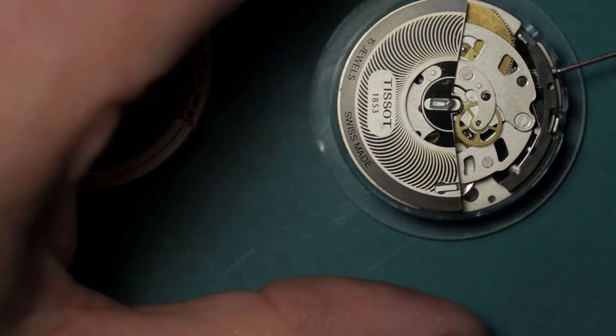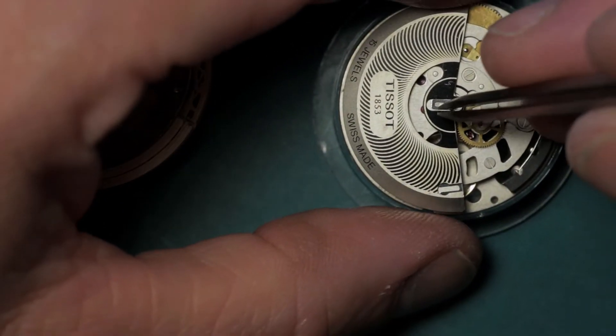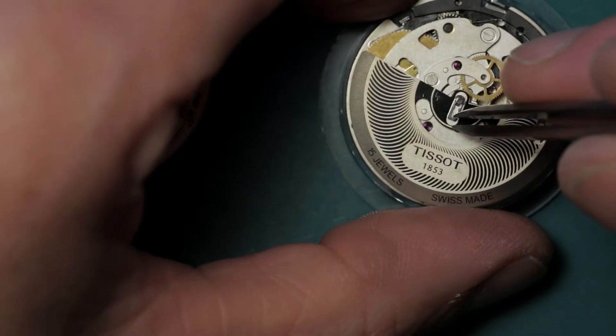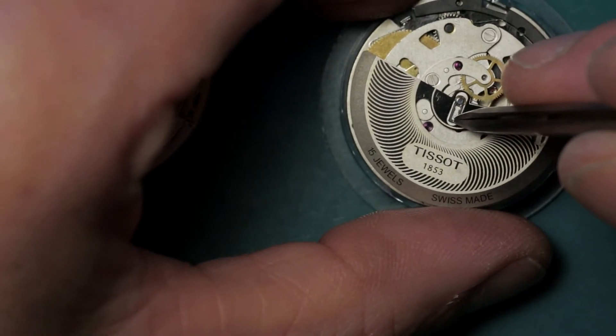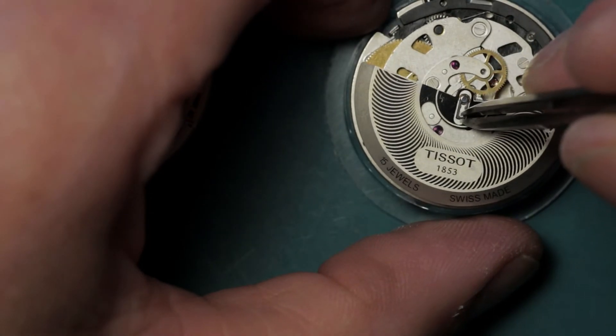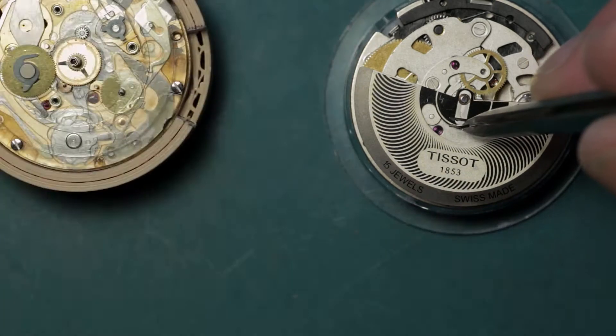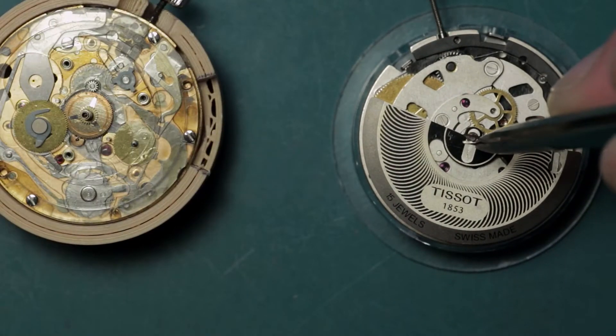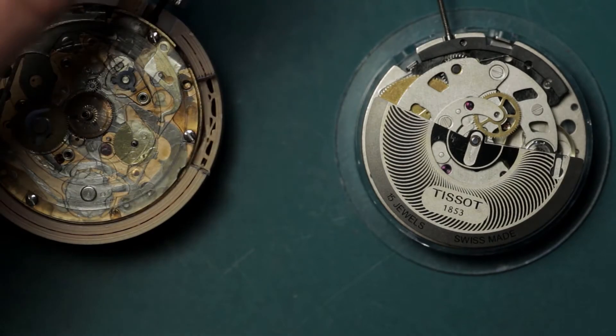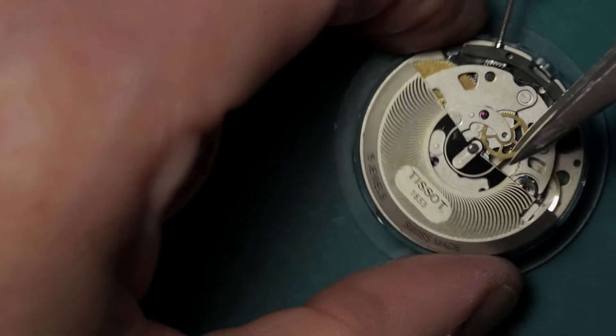Because what happened was Tissot asked ETA for a cheap, reliable, easily bulk-manufactured movement, and ETA obviously looked through their archives and said, 'Hey, you know, the Lemania was pretty good and that fits the bill, so let's go with that.'